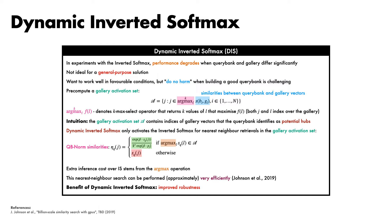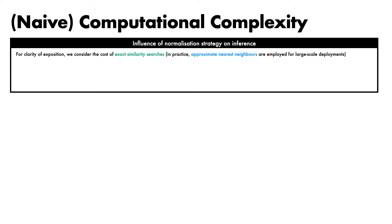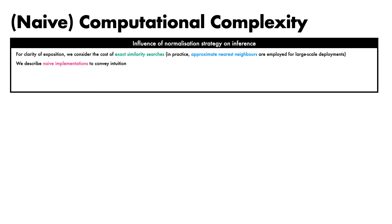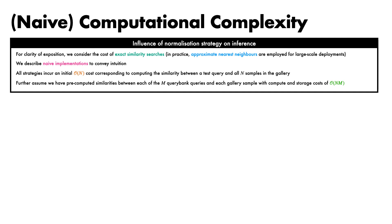We'll next give a brief sketch of the influence of these normalisation strategies on inference cost. Considering the cost of exact similarity searches and naive implementations to convey the basic intuition: all strategies incur an initial order-n cost corresponding to computing the similarity between a test query and all n samples in the gallery. We also assume that we have pre-computed similarities between each query bank query and each gallery sample, requiring compute and storage costs of order nm. For the globally corrected method, we determine the rank of the test query with respect to each gallery item using a binary search over the sorted pre-computed similarities for a cost of order n log m. For CSLS, we pre-compute for each gallery sample the k closest query bank similarities and store averages in a vector of size n, and compute the average similarity of the k most similar gallery items to the test query using quick select in order-n time on average.